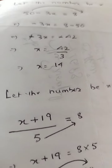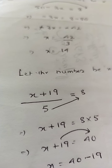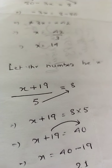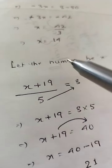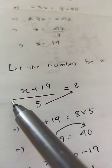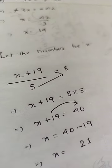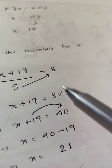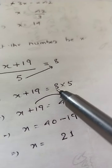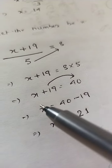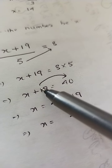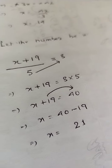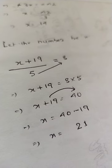Sum number (f): Ebenhul thinks of a number. If she adds 19 to it and divides the sum by 5, she gets 8. Let the number be x. The equation is (x + 19)/5 = 8. Transpose the 5 — it is in division form, so it multiplies: x + 19 = 8 × 5 = 40. Transpose +19: x = 40 − 19 = 21.